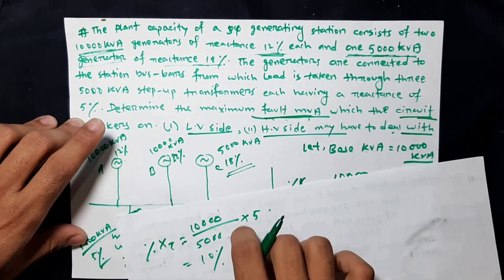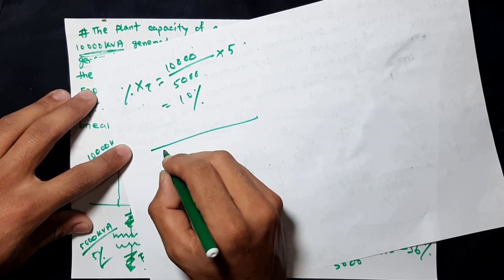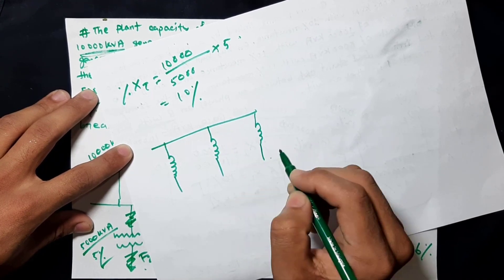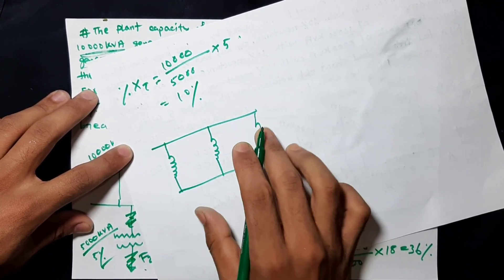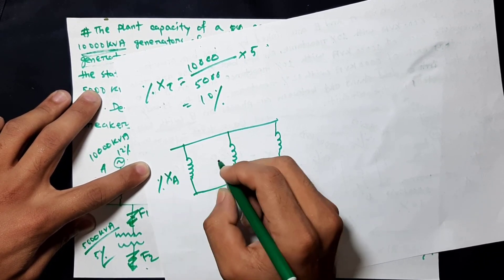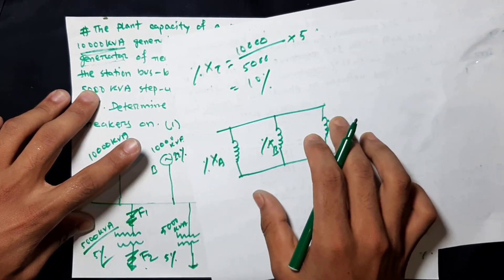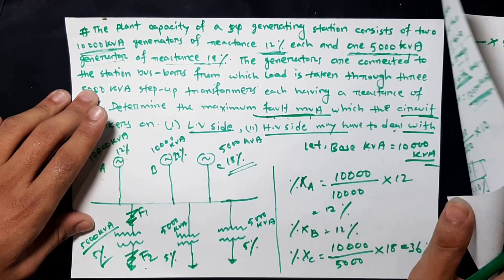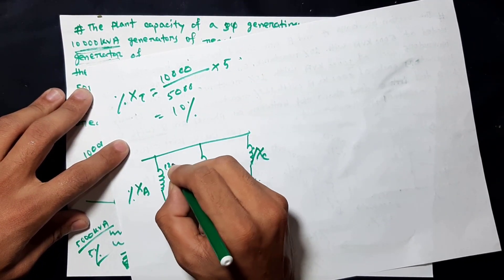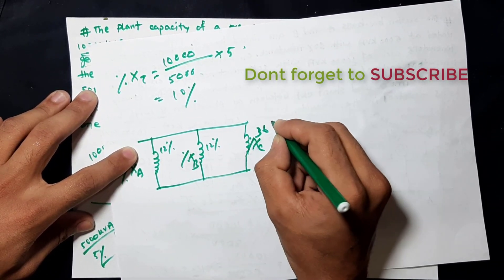We have to draw the reactance diagram. The reactance diagram has three points. We have to draw alternator A, alternator B, alternator C. The total equivalent percentage reactance is 36%.